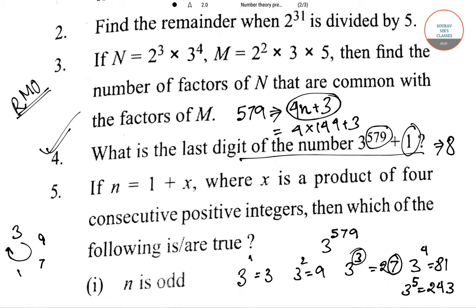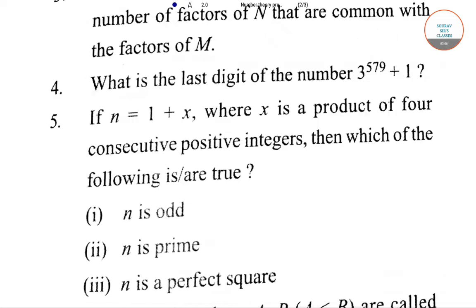Now coming to question number 5. If n equals 1 plus x, where x is a product of 4 consecutive positive integers, then which of the following statements is true: n is odd, n is prime, or n is a perfect square? Let's check it.